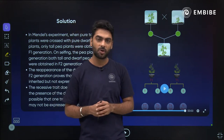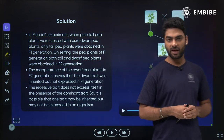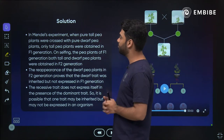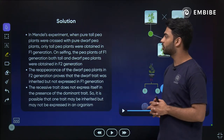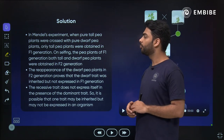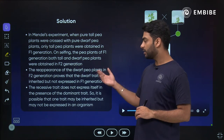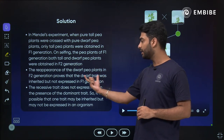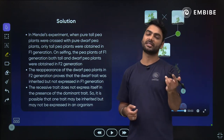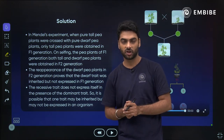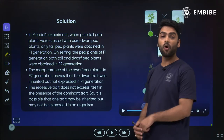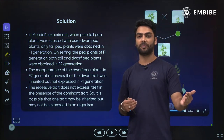In Mendel's experiment, when pure tall pea plants were crossed with pure dwarf pea plants, only tall plants were obtained in F1. When he selfed F1, he got both tall and dwarf in F2. This means the dwarf trait was not expressed in F1, but it existed - it was recessive. All these questions are from your previous year board papers.